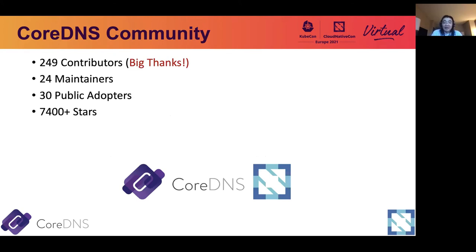As a CoreDNS community update: as of now, we have 249 contributors. We certainly want to see this number grow continuously, so big thanks to anyone who contributed to CoreDNS. We have 24 maintainers so far. It's very easy to become a maintainer in CoreDNS — if you can contribute a significant pull request and get sponsorship from one existing maintainer, we will add you as a maintainer. We also have 30 public adopters — those are enterprises or institutions that are willing to share their names with us. Since CoreDNS is the default DNS server for Kubernetes, the actual usage is much larger than 30.